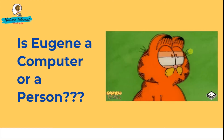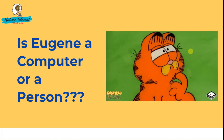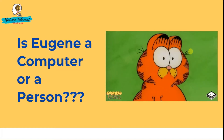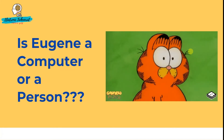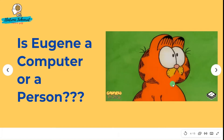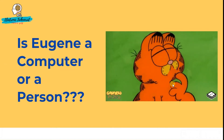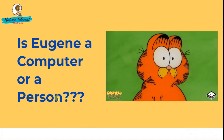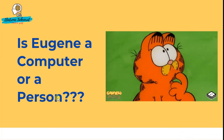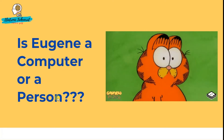One criticism of the Turing Test as a test for intelligence is that it may actually measure whether the computer behaves like a human, more than whether it is intelligent. The test has been passed by computer programs that keep changing the subject, make plenty of spelling errors, and sometimes refuse to respond at all. A famous example is Eugene Goostman — you might be confused whether Eugene is a computer or a person.